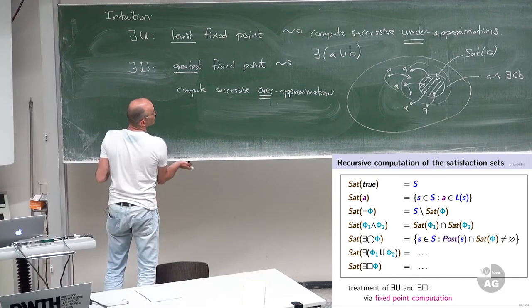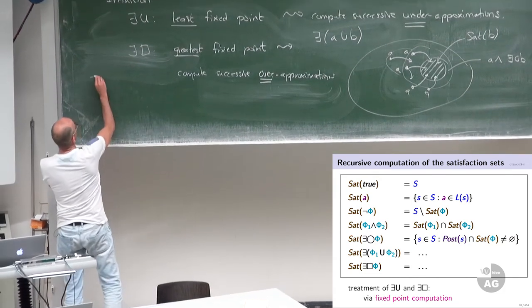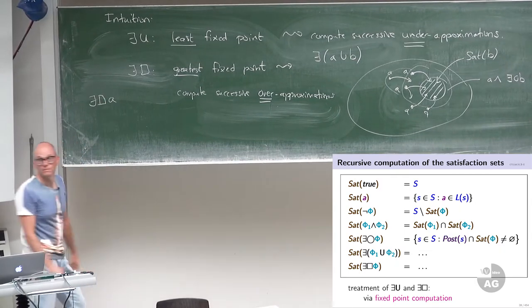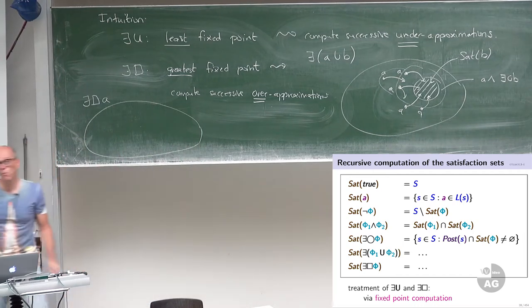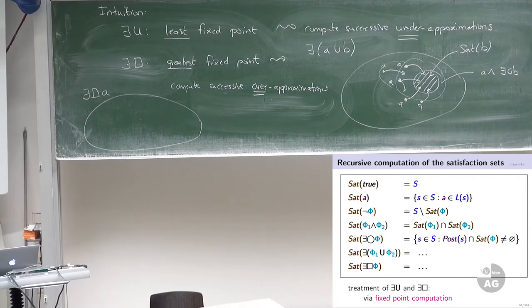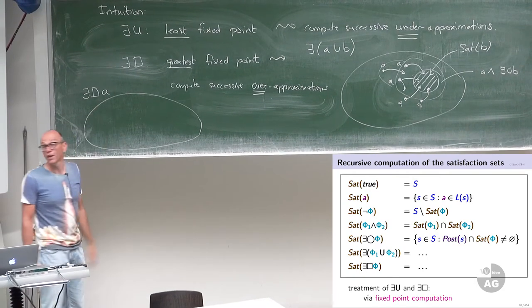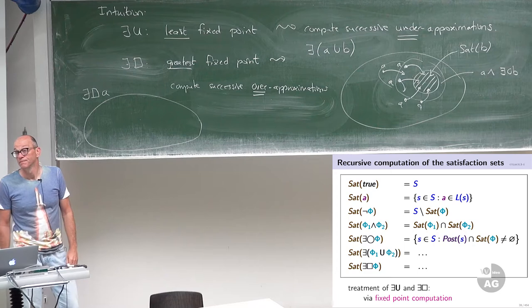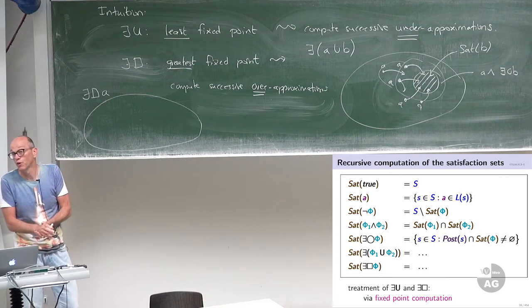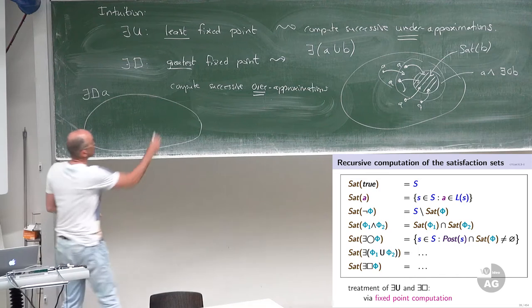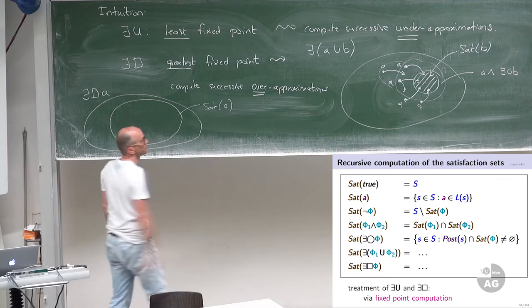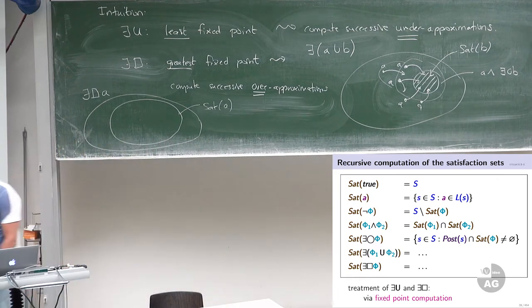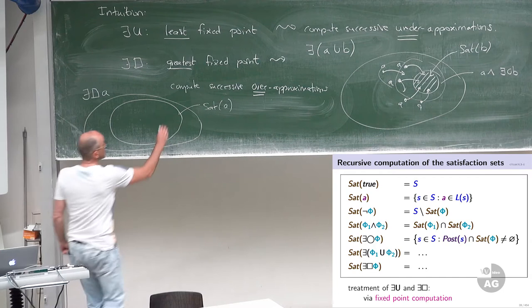I'm not going to talk about counter-examples in CTL — that's more advanced. Let's take an example. The expansion law says: there exists a path satisfying phi1 until phi2 if and only if the current state satisfies phi2, or if not, it satisfies phi1 and has at least one successor satisfying the until formula. In terms of sets, the set of states satisfying this formula equals the set satisfying phi2, union the set of phi1 states where at least one direct successor is in the satisfaction set.